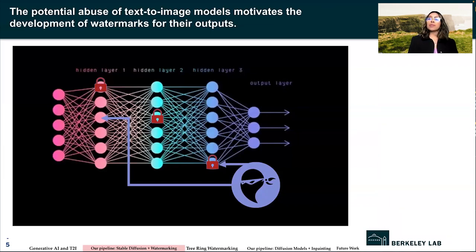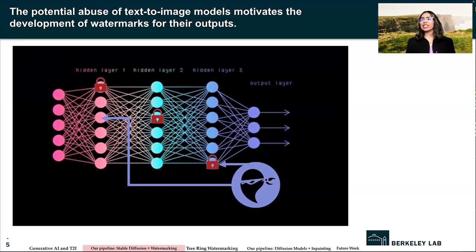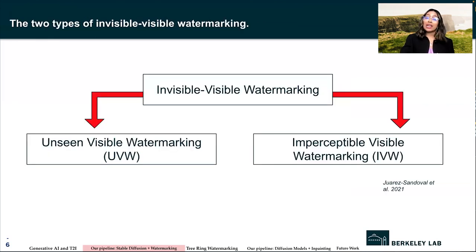The potential abuse of text-to-image models motivates the development of watermarks for their outputs. A watermarked image is essentially a generated image containing a signal that is invisible to humans and yet marks the image as machine generated. This documents the use of image generation systems, enabling social media and news organizations and diffusion platforms themselves to mitigate harms, cooperate with law enforcement, or tag large-scale datasets by identifying the origin of the image.